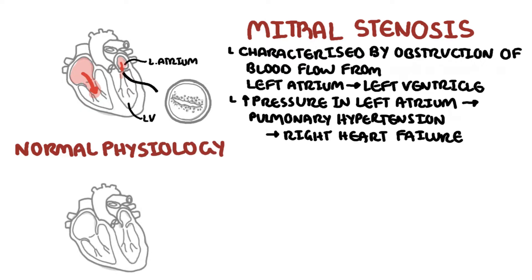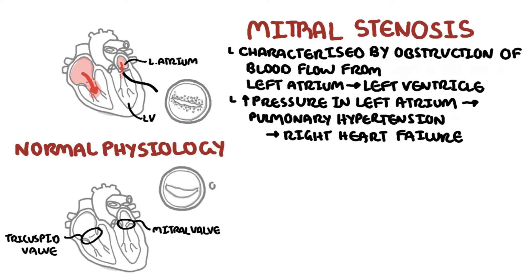The mitral valve is an atrioventricular valve separating the atria and the ventricle. The tricuspid valve is also an atrioventricular valve. The mitral valve is made up of two leaflets, and the normal area of the mitral valve is 4 to 6 cm².